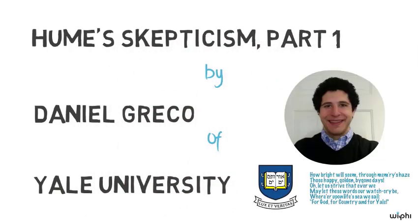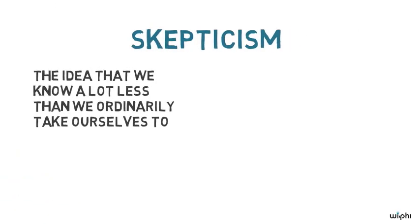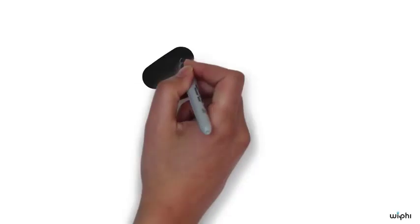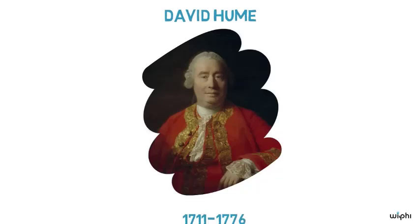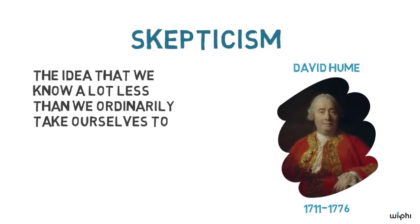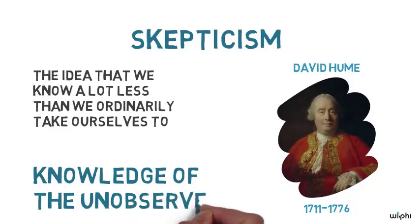In particular, I'll discuss a version of skepticism, which is the idea that we know a lot less than we ordinarily take ourselves to. The sort of skepticism I'll discuss is due to David Hume, who is an 18th century Scottish philosopher and historian, and it targets our knowledge of the unobserved. To get clear about just what that amounts to, we'll have to start with some examples.